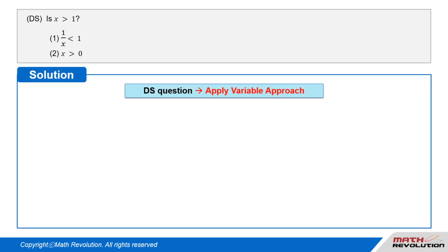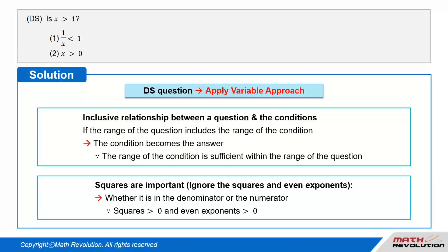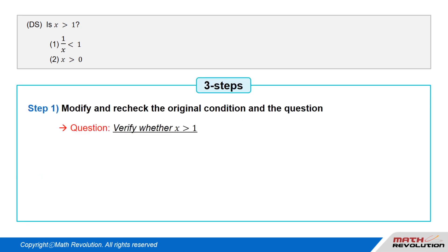Let us solve this DS question using the variable approach. The inclusive relationship between a question and the conditions states that if the range of the question includes the range of the condition, then the condition becomes the answer because the range of the condition is sufficient within the range of the question. We are required to verify whether the range x is greater than 1 is true.